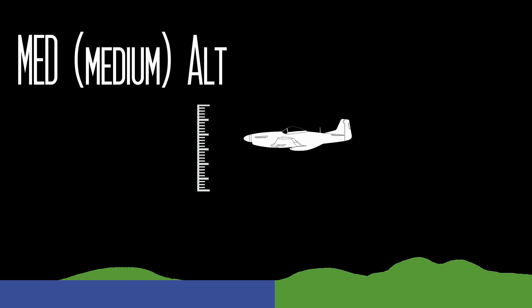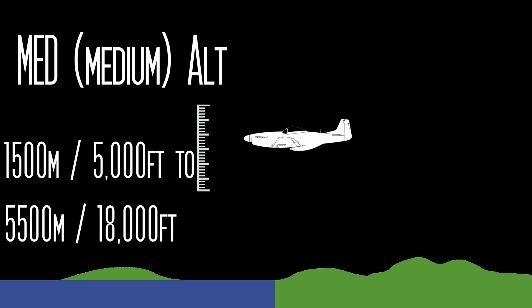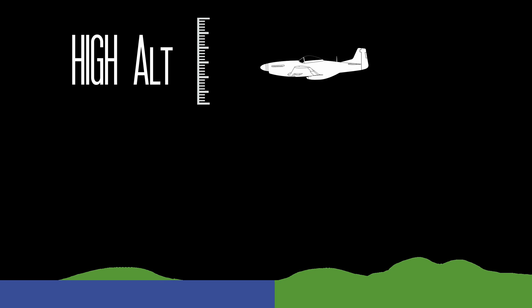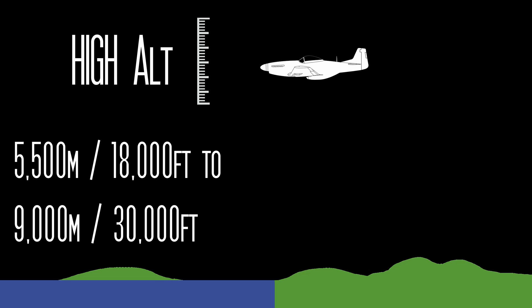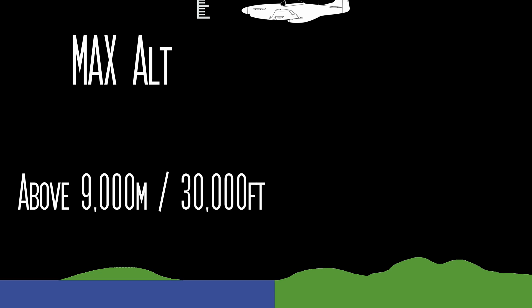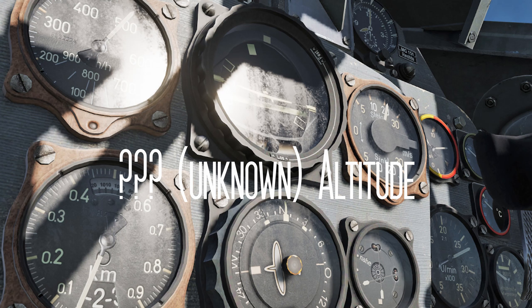The next altitude category is medium: contacts between 1,500 meters and 5,500 meters, or between 5,000 feet and about 18,000 feet. Above them are high contacts, operating above 5,500 meters — most twin and four-engine bomber activity will occur in this height range. The last altitude category is max altitude: contacts operating above 9,000 meters or above 30,000 feet, right up to the service ceiling of the aircraft. Altitude may also report back as unknown, which means the radar is unable to accurately fix the altitude of a contact.